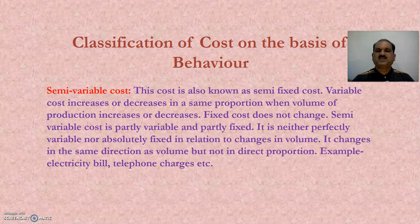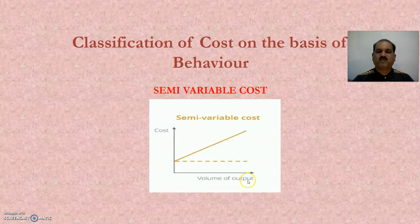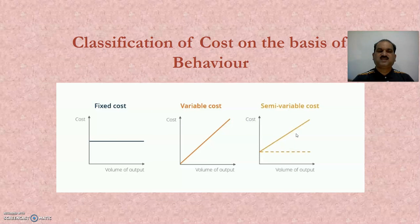Semi-variable cost, also known as semi-fixed cost, is partly variable and partly fixed. It is neither perfectly variable nor absolutely fixed in relation to changes in volume of production. It changes in the same direction as volume but not in direct proportion. For example, electricity bill, telephone charges, etc. In the figure, a fixed cost line appears first, and from that line, a semi-variable cost line rises in increasing order. A combined figure shows all three costs — fixed, variable and semi-variable — together.